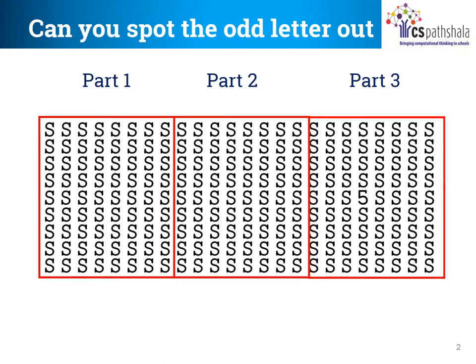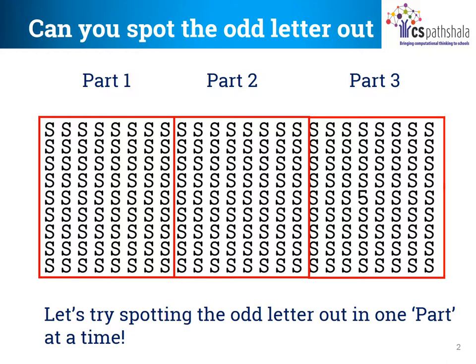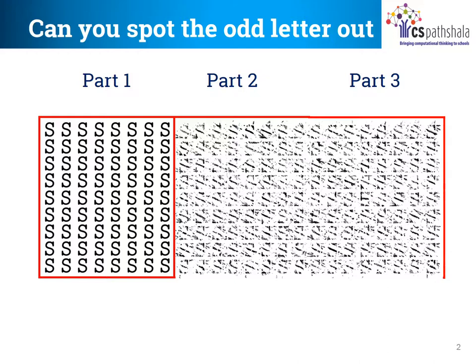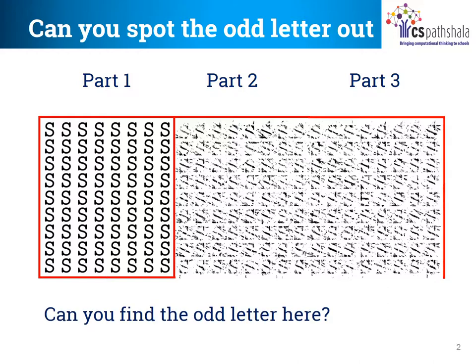Let's try that. Remember friends, a big problem is easy if divided into small parts. And here is the picture divided into 3 parts. Let's try spotting the odd letter out in one part at a time. Let's start with part 1. Can you find the odd letter here? Take your time. No, it seems all letters are the same.